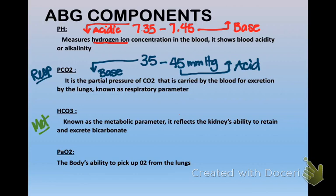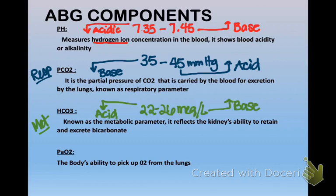Then you've got your HCO3, or bicarb — that's your metabolic component. It's your metabolic parameter and reflects the kidney's ability to retain and excrete bicarbonate. The normal range is 22 to 26 milliequivalents per liter.